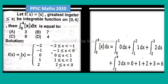Solution: f(x) = [x] equals -2 where -2 ≤ x < -1; equals -1 where -1 ≤ x < 0; equals 0 where 0 ≤ x < 1; equals 1 where 1 ≤ x < 2; equals 2 where 2 ≤ x < 3.